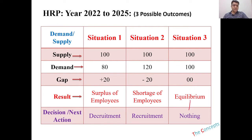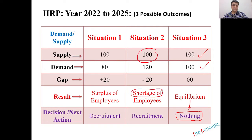If you have the equilibrium position, then you don't need to do anything because you are fine with the number and kind of people you want and the number and kind of people you have. In the second situation, you have a shortage of employees, so you will move towards recruitment.